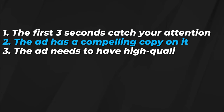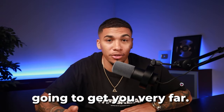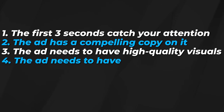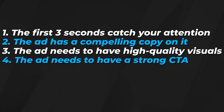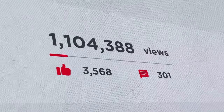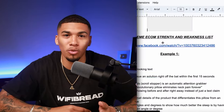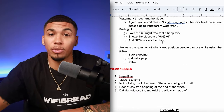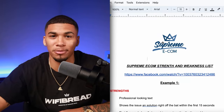Number three: the ad needs high-quality visuals. Low-quality content will not get you very far — viewers need to clearly see the product and everything it has to offer. Number four: the ad needs a strong call to action. Viewers have to be told where to go, otherwise they'll just keep scrolling. Number five: the product should have some sort of storyline. Storytelling pulls the consumer's attention, makes them want to watch the entire ad, and can help create the viral aspect that keeps eyes on your ads. With these things in mind, you can watch competitors' videos and build a simple pros and cons list, letting your editors know exactly what you like and don't like.